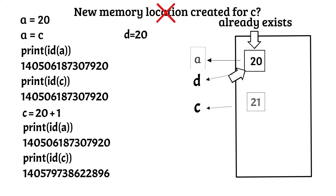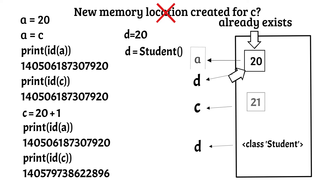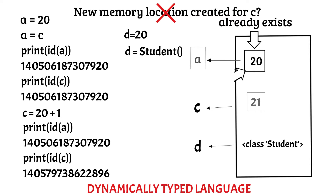Later when the value of the variable D is changed to some other object, say for example a class object, then immediately a new object will be created in memory with reference to the variable name. This is why Python is known as a dynamically typed language, where the memory allocation of values is dynamic in nature. I hope that this is clear.